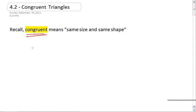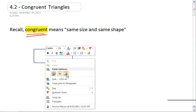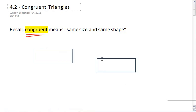But if I draw a shape and then I can copy it, these shapes are congruent because they're the same size and the same shape.